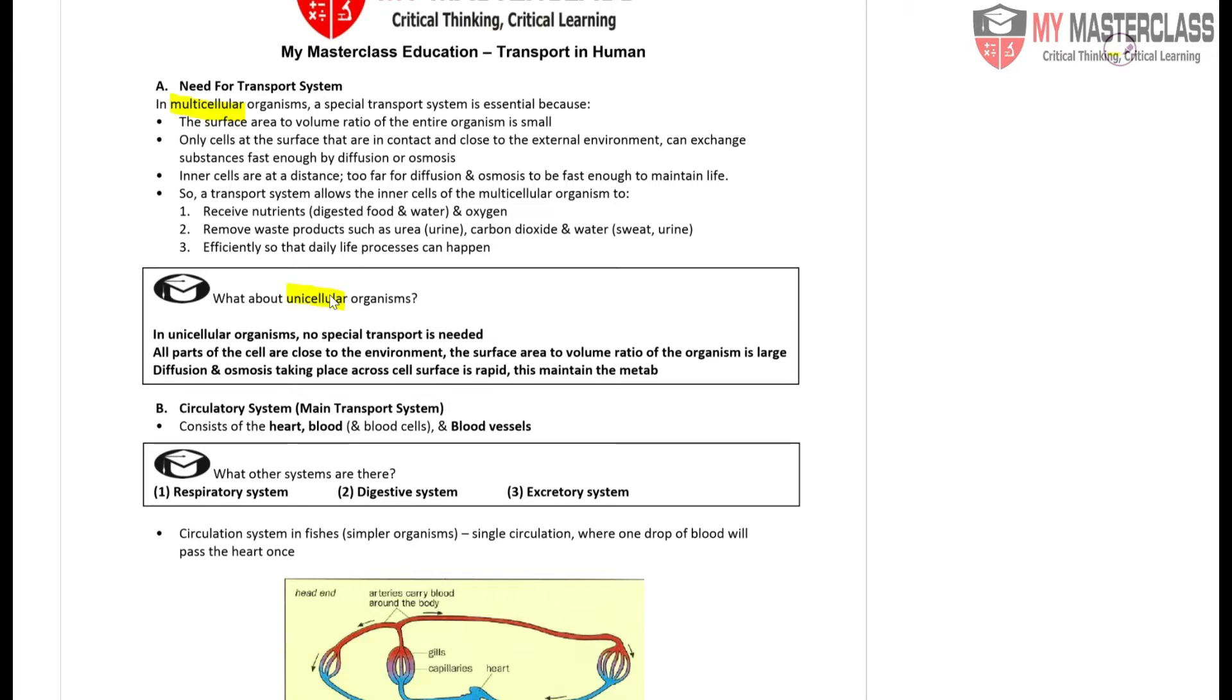Unicellular organisms, as the name suggests, are only made up of one cell. Whereas multicellular organisms, for example humans and animals, have multiple numbers of cells, which is why we require a special transport system.